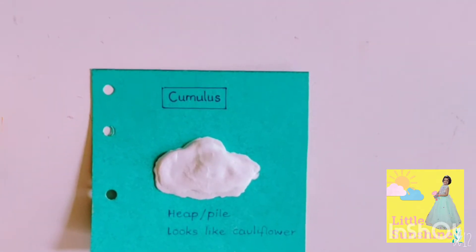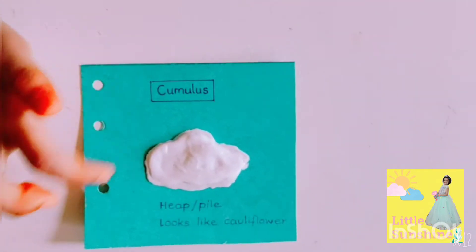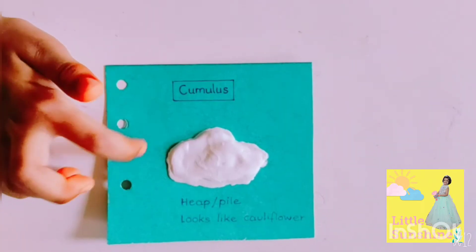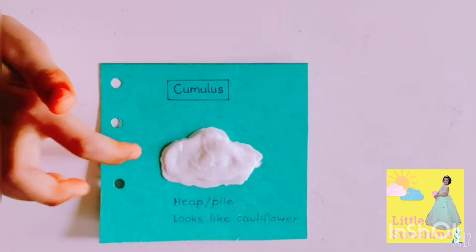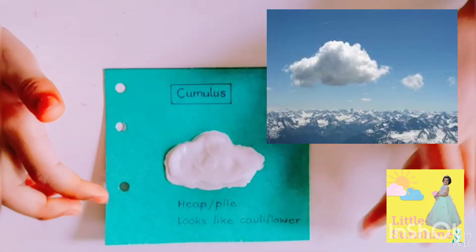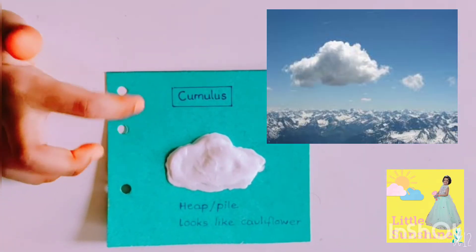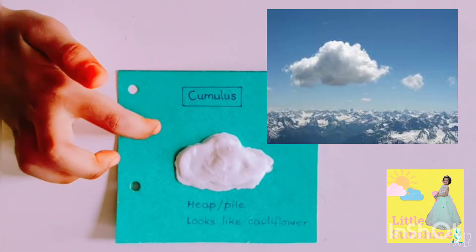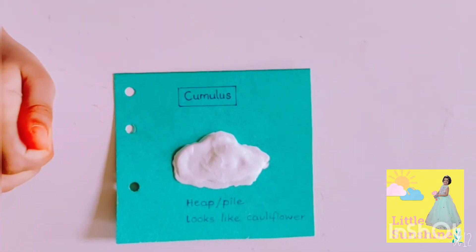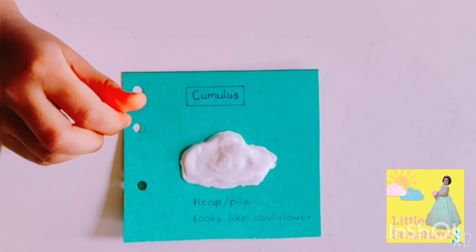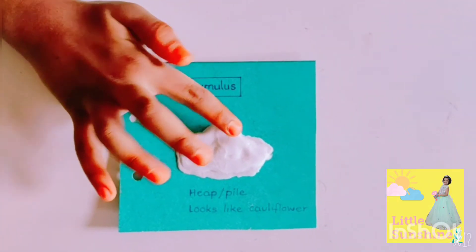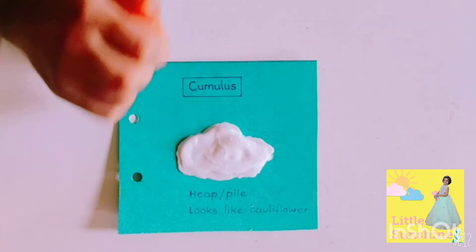This is Cumulus Cloud. We may see this often. It looks like cauliflower. We made this with shaving cream and glue.